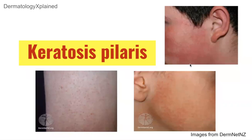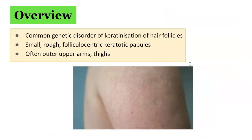Welcome to Dermatology Explained. Today's video presentation is focused on a condition called keratosis pilaris. Keratosis pilaris is amongst one of the most common skin presentations and can be considered a normal variant. It is the most common form of follicular keratosis. This condition is multifactorial and innocuous, and often affects the extensor surfaces of the proximal extremities, such as the lateral aspects of the upper arms.